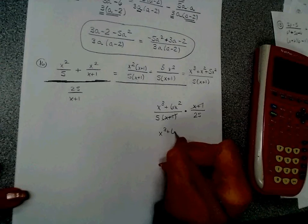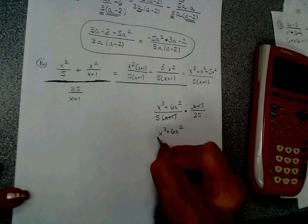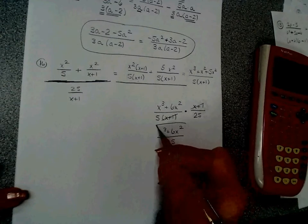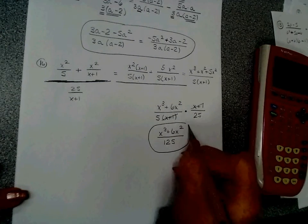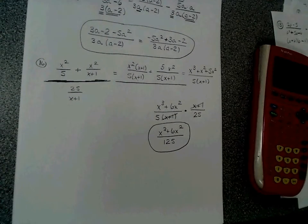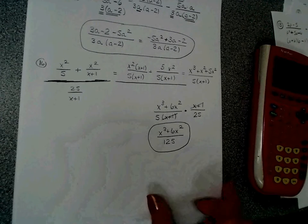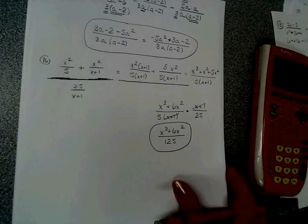So my final answer is x cubed plus 6x squared over 125. Now, we leave those and we go to variation: direct, inverse, joint, combo.